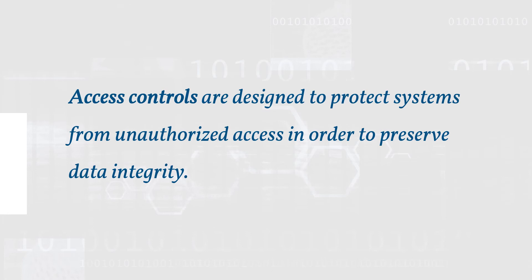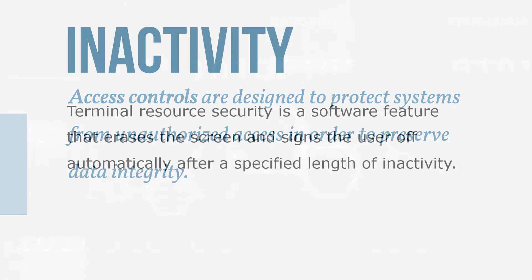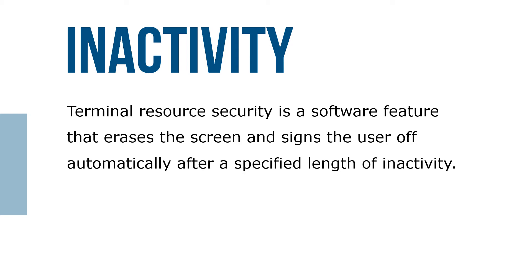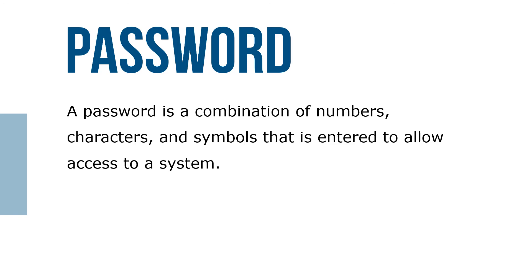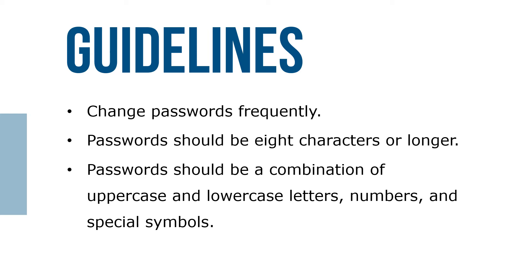Access controls are designed to protect systems from unauthorized access in order to preserve data integrity. Terminal resource security is a software feature that erases the screen and signs the user off automatically after a specified length of inactivity. A password is a combination of numbers, characters, and symbols entered to allow access to a system. To increase the effectiveness of passwords: change them frequently; passwords should be eight characters or preferably longer; contain a combination of upper and lowercase letters, numbers, and special symbols; and passwords should never be written down.